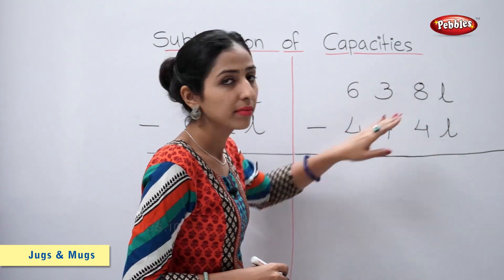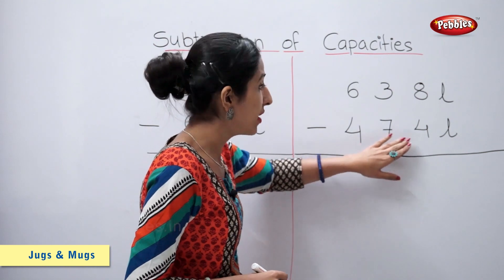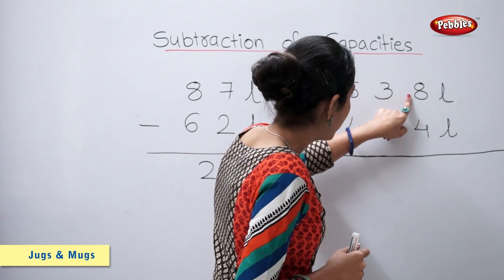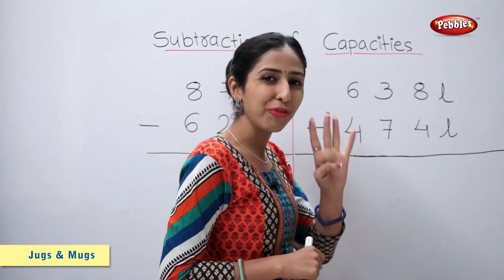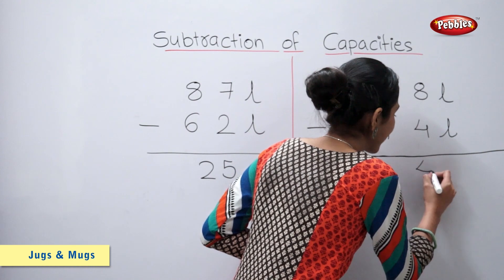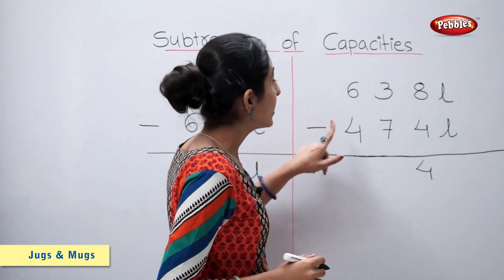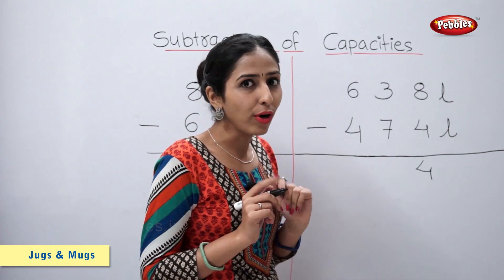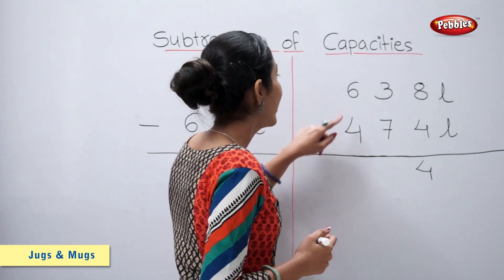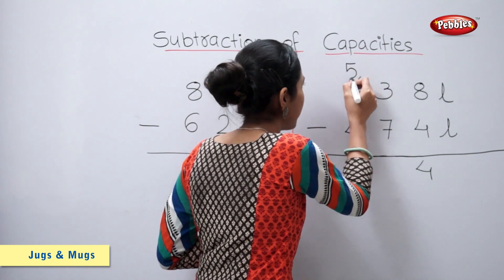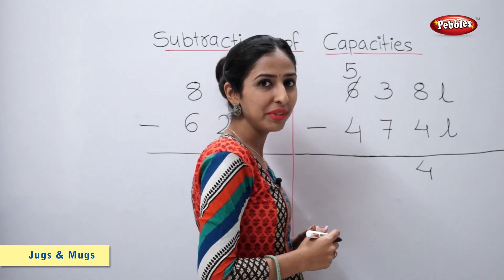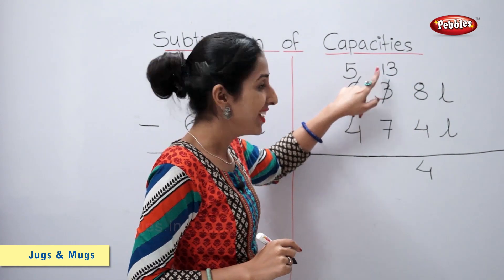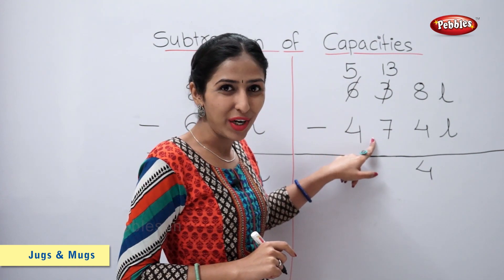638 litres minus 474 litres is equal to how much? Let's find out. 8 minus 4 is equal to 4. 3 minus 7 — as we all know, 3 minus 7 is not possible. So let's borrow: 6 becomes 5, and 3 becomes 13. Now, 13 minus 7 is equal to 6.